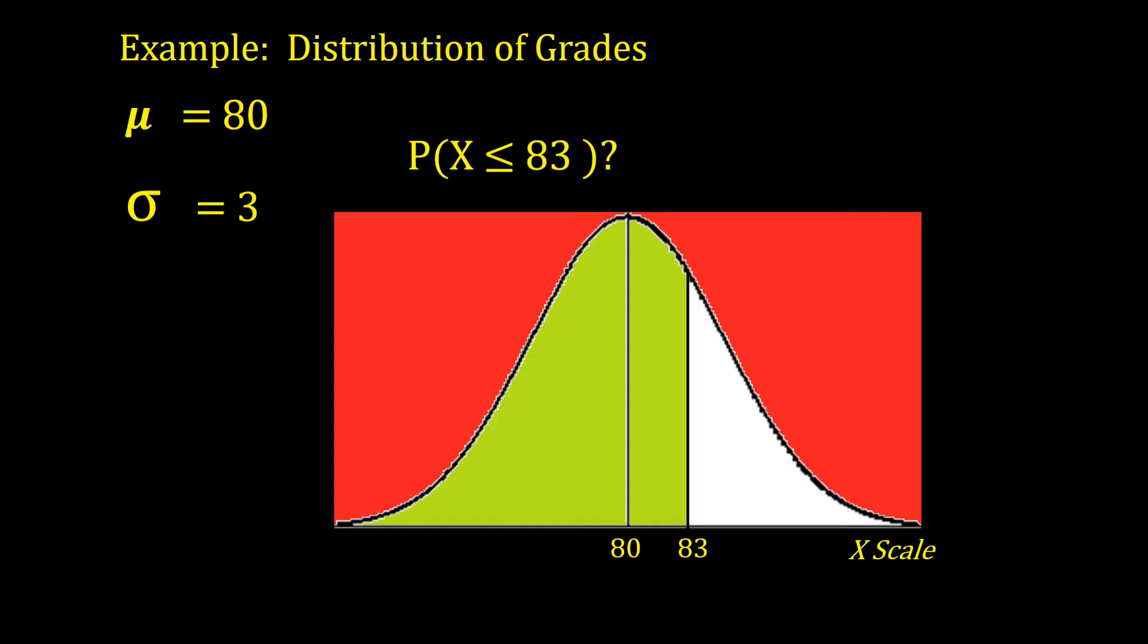To have Excel do these calculations, we would fill in x as 83 and then the mean is 80, a standard deviation of 3, and the word TRUE for cumulative because it is the cumulative area at or below 83. So let's see how this would be done in Excel.